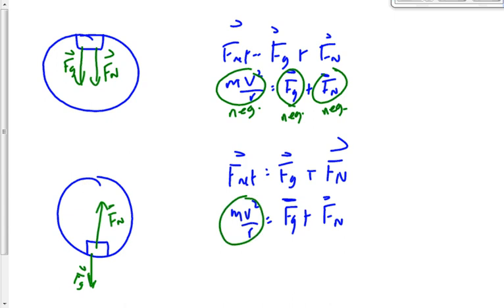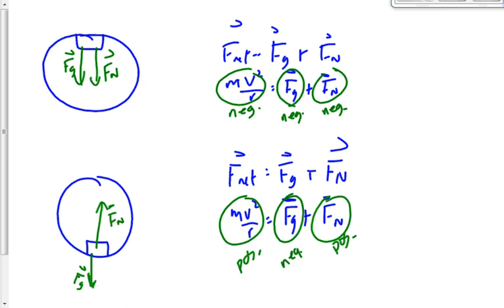At the bottom of the circle, gravity is negative because it acts down, but the normal force acts upward toward the center, so it's positive. The centripetal force is also positive because it points toward the center of the circle, which is upward when you're at the bottom. The normal force is bigger, so the net centripetal force is positive.